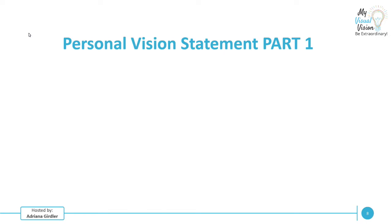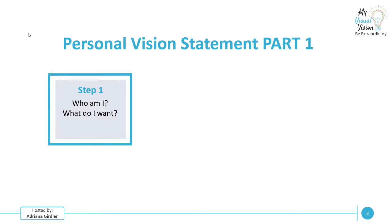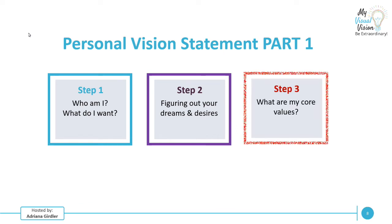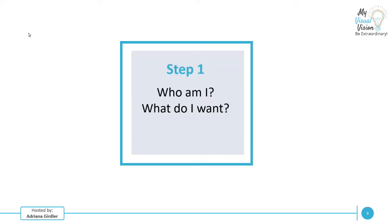Let's get into creating our personal vision statement and focus on Part One. There are very specific things we're going to look at: step one is to understand who am I and what do I want; step two is about figuring out your dreams and desires; and step three is about what are your core values. Let's get to it.